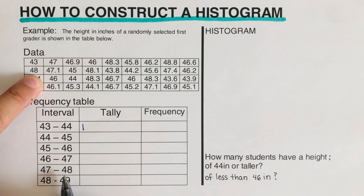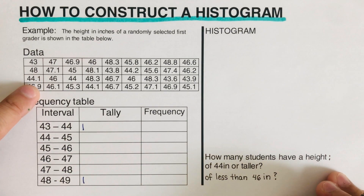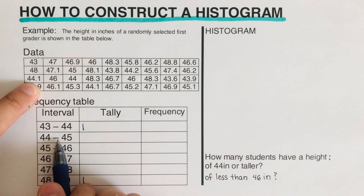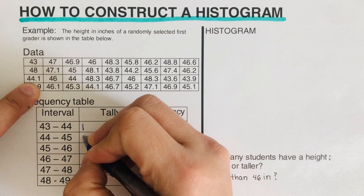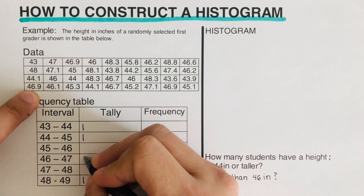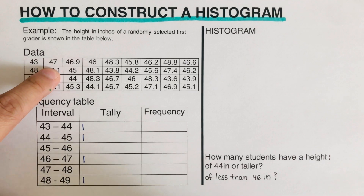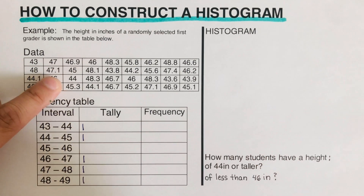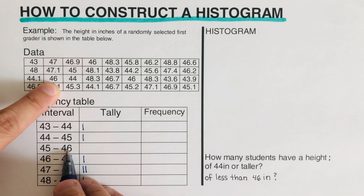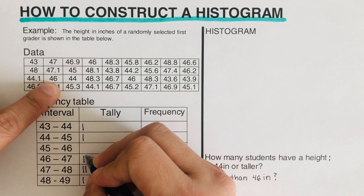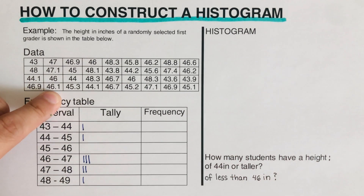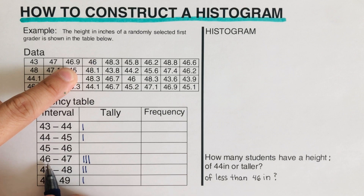48 is a solid 48 — this upper bound is not included — so 48 is tallied in the 48–49 row. Then 44.1 belongs to the 44–45 interval. 46.9 goes in the 46–47 row. Solid 47 goes in the 47–48 row. 47.1 also goes there. Solid 46 — the lower bound is solid — so 46 is tallied in the 46–47 row.